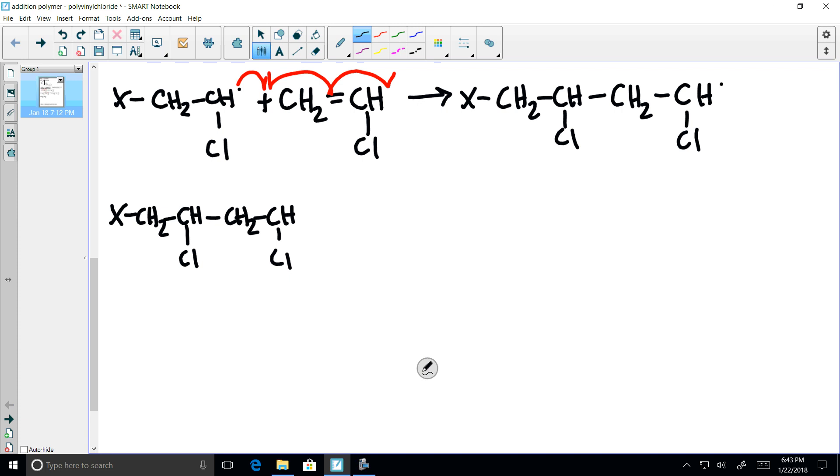So here is our product of step two. It has two pieces, two mers, and it attacks another monomer. Once again, the free radical electron attacks the empty space, making a joint to the first carbon. The upper bond breaks. One electron to the left, one to the right. One, two, three.